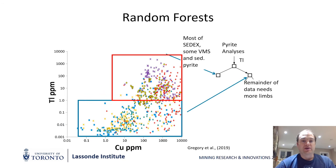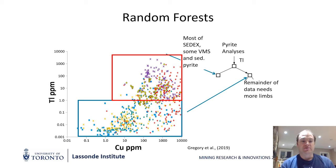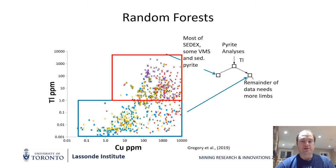Very briefly, if we look at thallium as an example, our random forest can use thallium to split the data set into mostly sedimentary, VMS, and sedimentary-entry pyrite, and then our higher temperature hydrothermal deposits. The given tree would then go through a series of different trace elements and bin the data appropriately, using the training set to identify the specific deposit type. It would do this 500 times with different permutations of trace element data to select the correct ore deposit type.